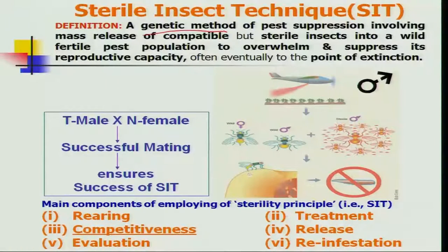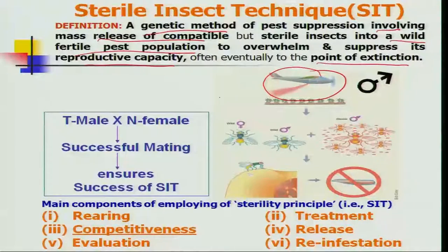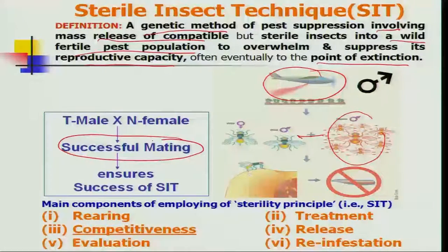The sterile insect technique can be defined as a genetic method of pest suppression involving mass release of compatible but sterile insects into a wild fertile pest population, to overwhelm and suppress its reproductive capacity — often eventually to the point of extinction. By this technique we may eradicate the pest species from the ecosystem. When released aerially, the sterile males compete with natural wild males for mating with females, and this competition is essential for the success of SIT.